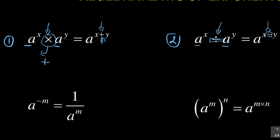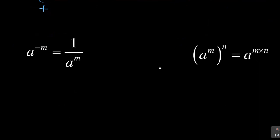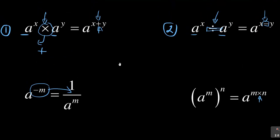The last two laws of exponents: if you have a negative sign, which is A to the power negative M, to get rid of this negative you introduce a fraction — 1 over. And also when exponents are separated by a bracket, meaning A to the power M, bracket to the exponent N, you multiply those exponents.